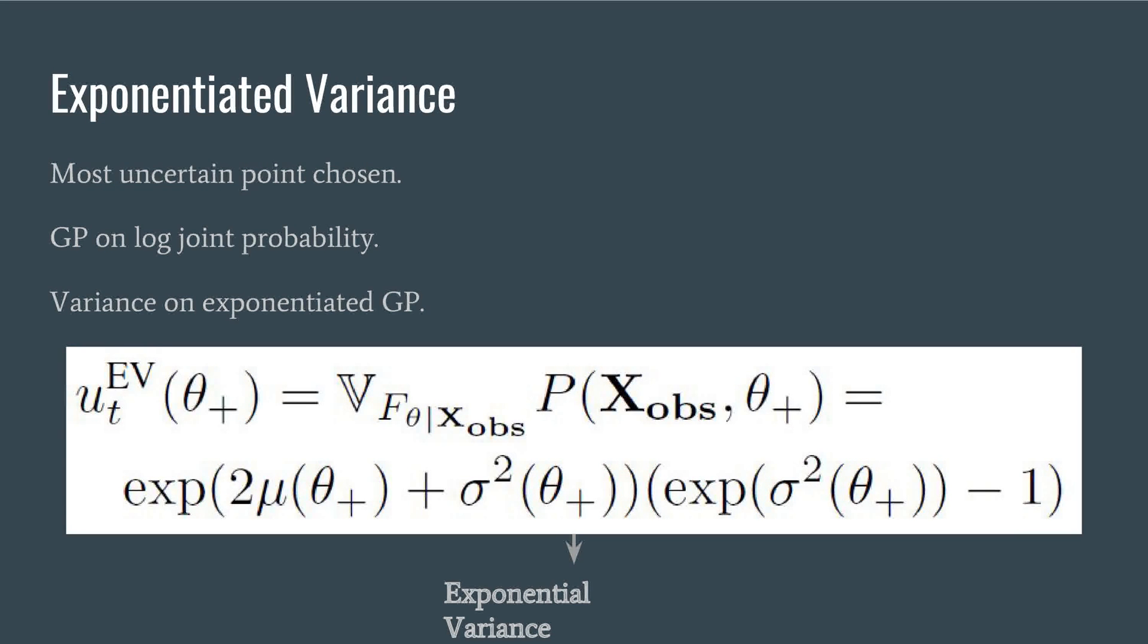In EV, we choose the point with the most uncertainty. We use a GP on the log joint probability. At any given point in this GP, we have an associated posterior variance of the GP. However, this variance corresponds to the uncertainty of the log joint probability, whereas our objective is in learning the joint probability. Therefore, unlike usual GP active learning methods, the variance of interest here is in the exponentiated GP.